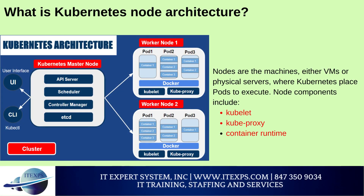What is Kubernetes node architecture? Nodes are the machines — either VMs or physical servers — where Kubernetes places pods to execute. Node components include: Kubelet, an agent on every node that ensures the containers described in pod specs are up and running properly; Kube proxy, a network proxy on each node that maintains network rules allowing communication from pods to network sessions, whether inside or outside the cluster, using OS packet filtering if available; and container runtime, the software responsible for running containerized applications — although Docker is the most popular, Kubernetes supports any runtime that adheres to the Kubernetes CRI.